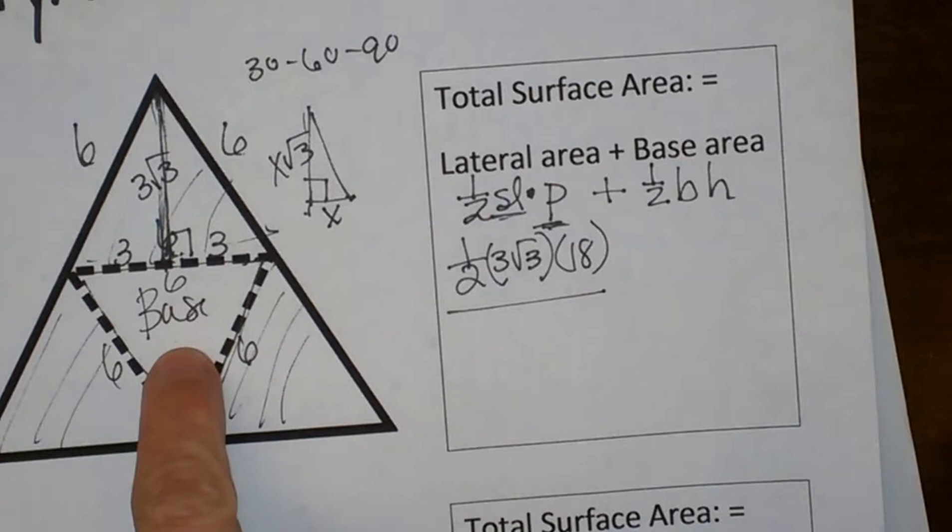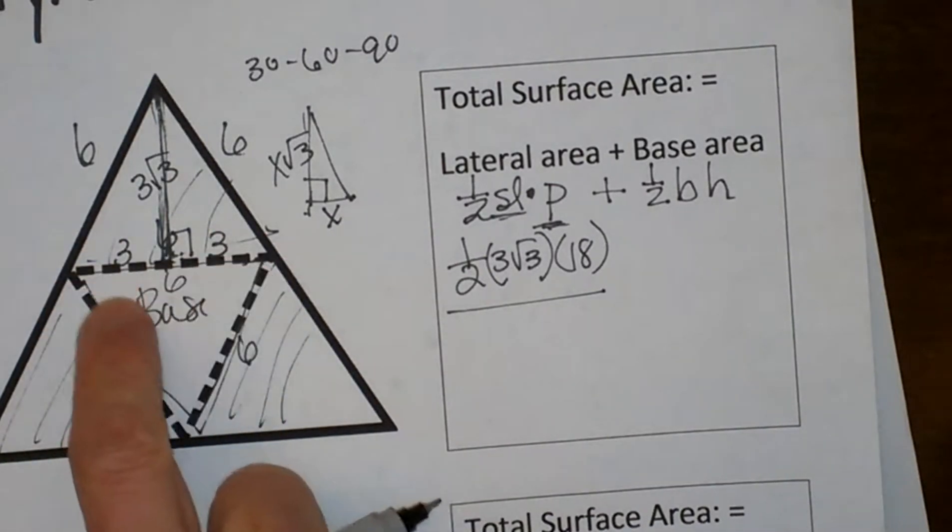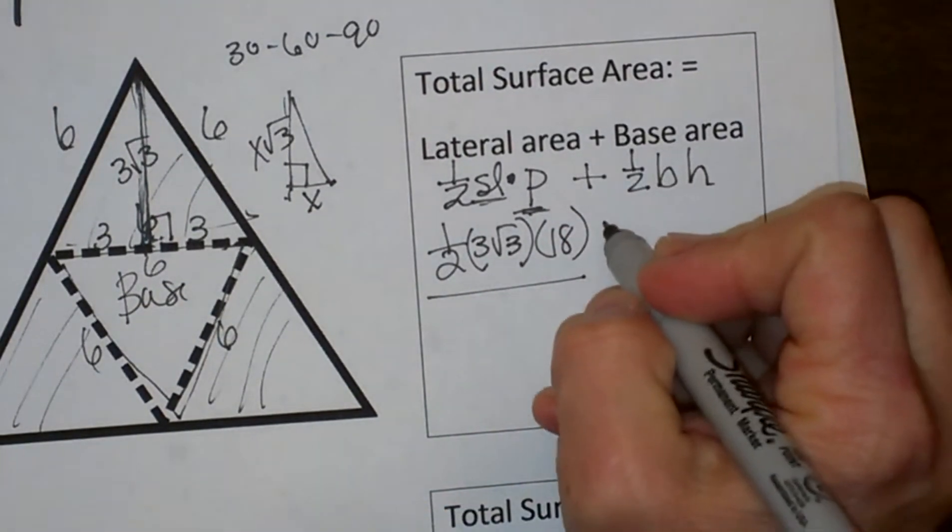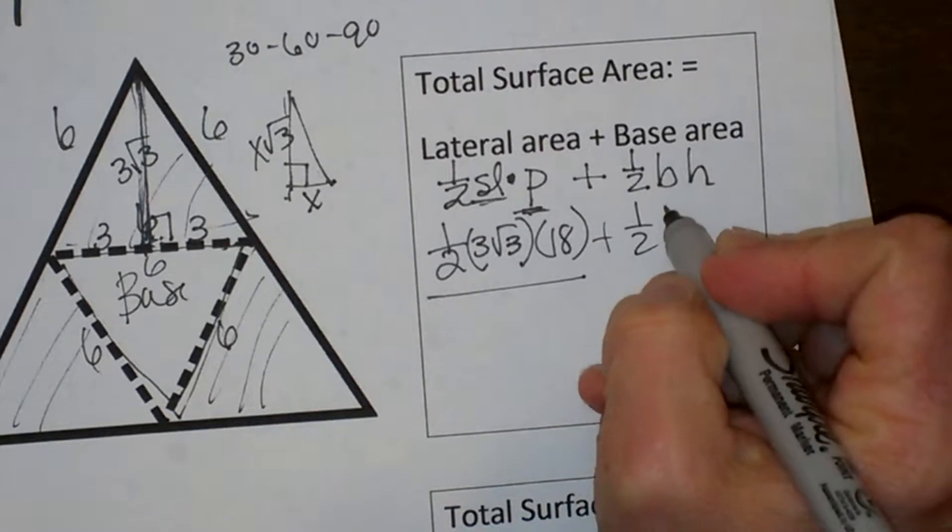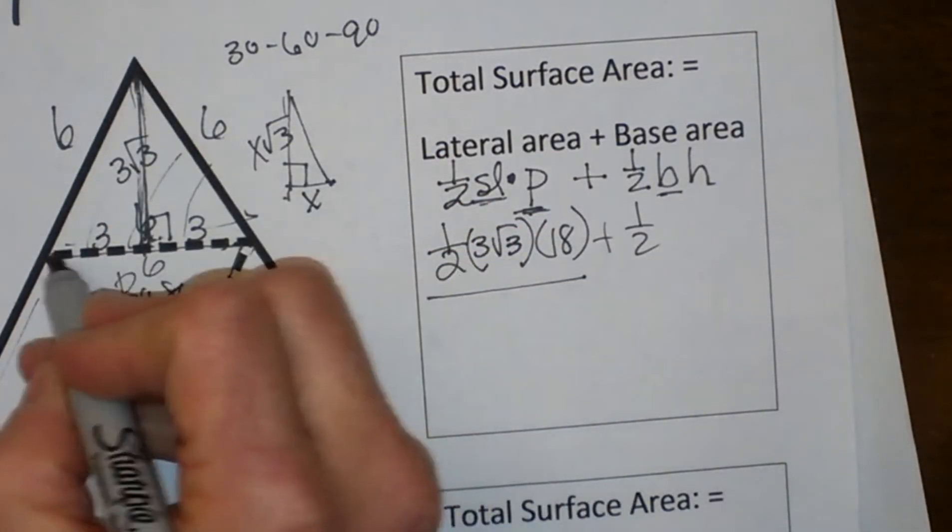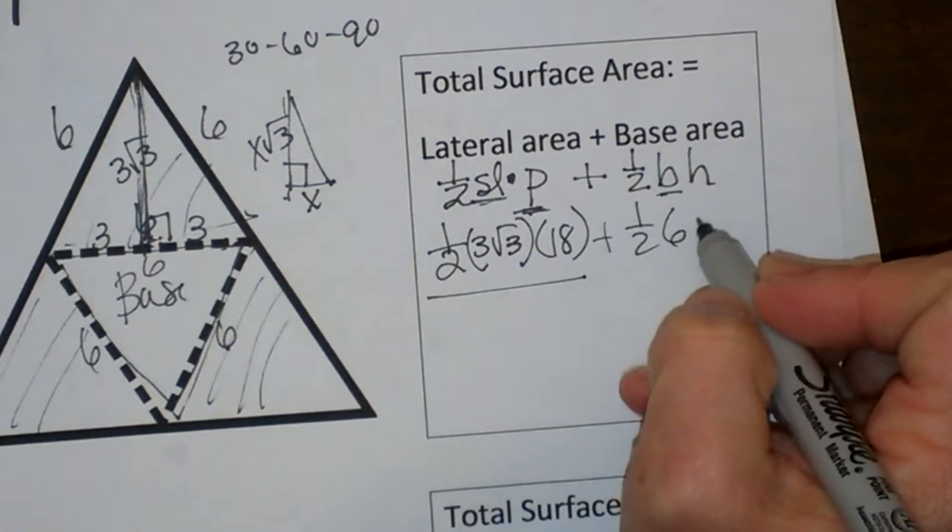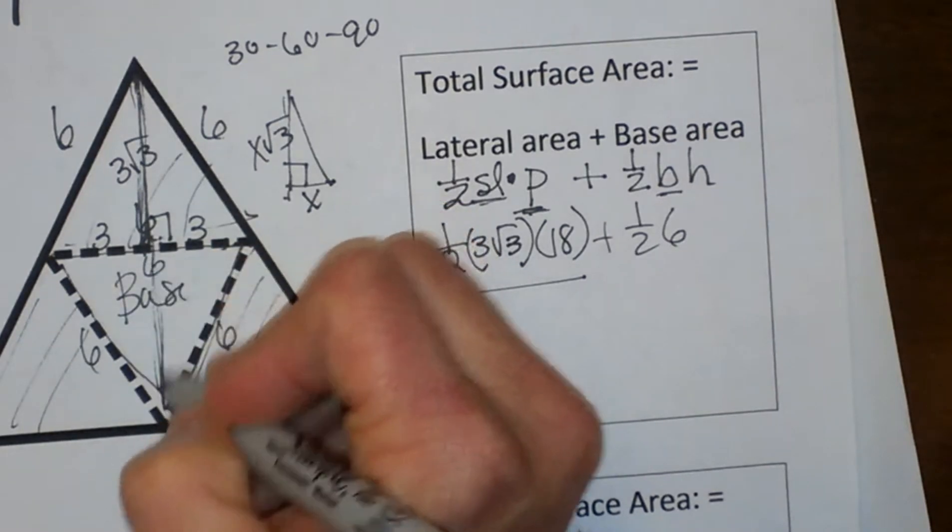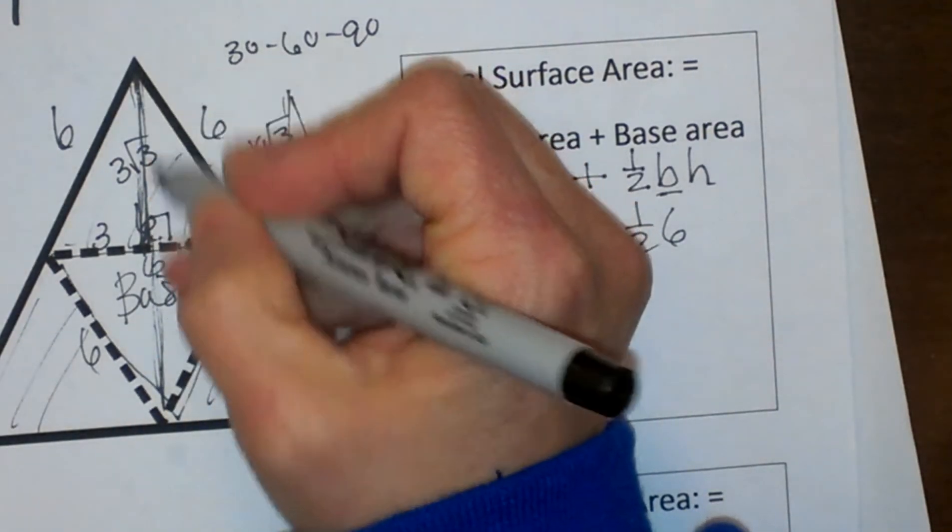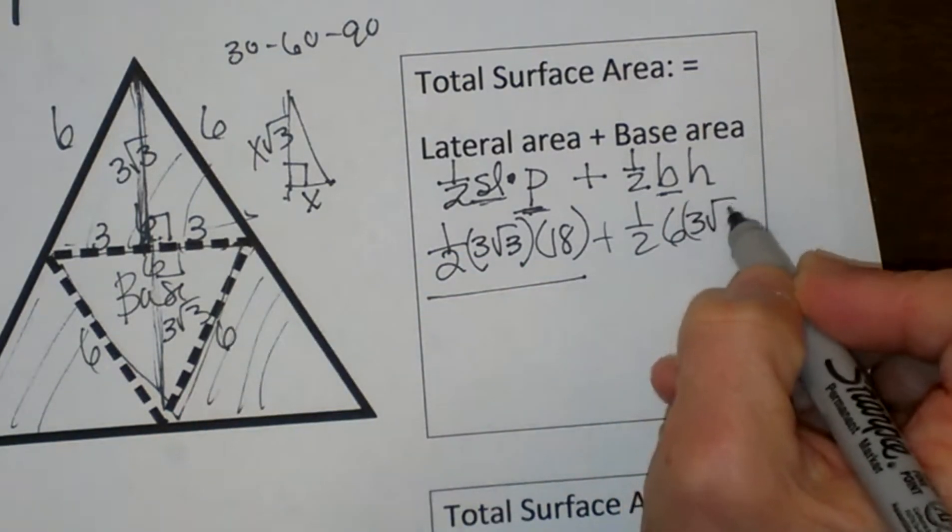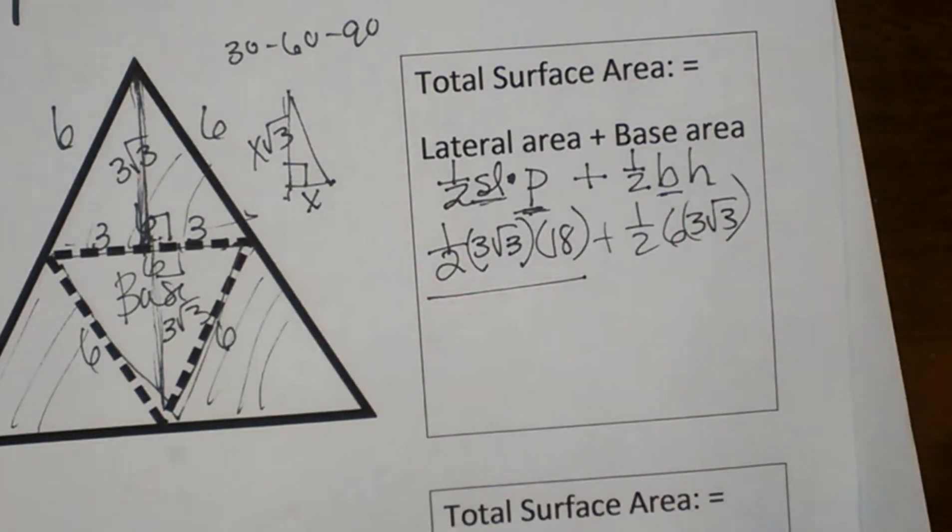Then I am going to add my base area. Well the base area in this case is exactly the same size as the other three. But if it wasn't, you would just use your triangle formula, which is 1 half base times height. Well the base on this one again is the same one of these types of triangles. So it is 6, and the height is the height of this distance right here, which is the same as this one, so that is another 3 root 3. So let's plug that in, 3 root 3.